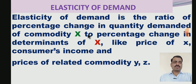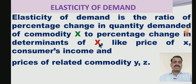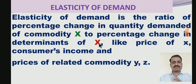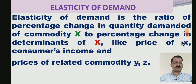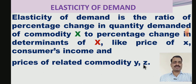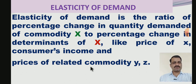The two factors are: one, percentage change in quantity demanded of commodity X; and two, percentage change in a determinant of X. There are only three determinants considered here: price of commodity X, consumer's income, and prices of related commodities Y and Z — which may be complementary or substitute commodities.